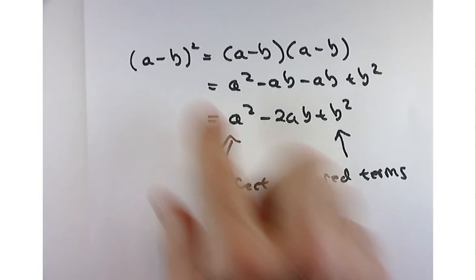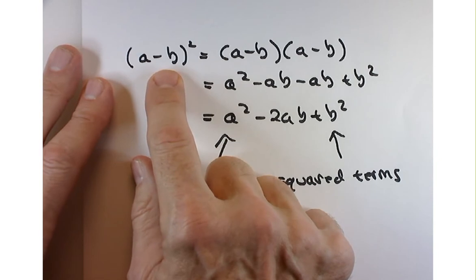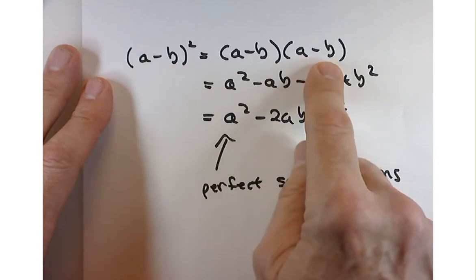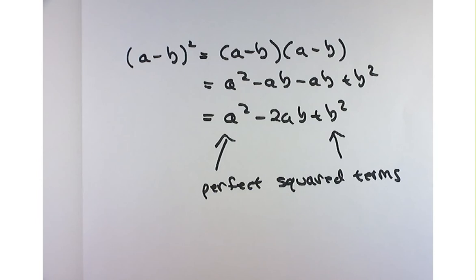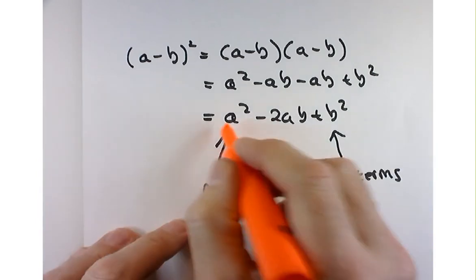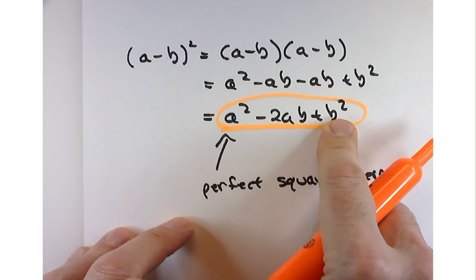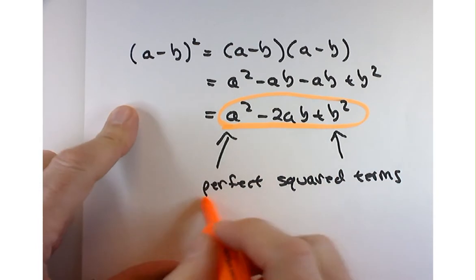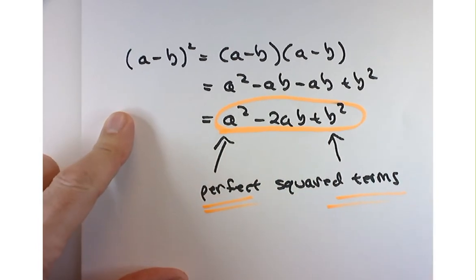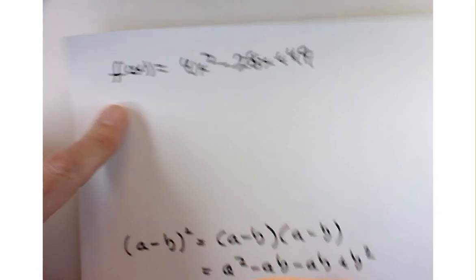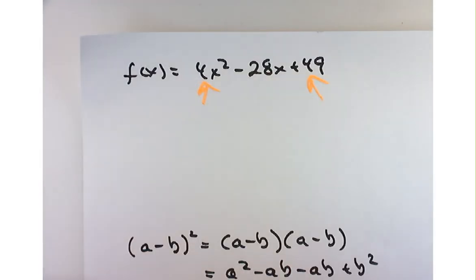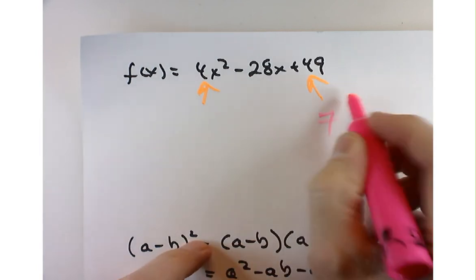If it has this interesting behavior where it only touches once, then there's something else special going on. That special thing comes by looking at this. If you were to square out a minus b, you might recognize a pattern here. It turns into a squared minus 2ab plus b squared. The end terms are perfect squares. That's what should catch your attention. Let's take a look at this. Well, 49 is a perfect square, right? I mean, that's just 7 squared. No big deal there.